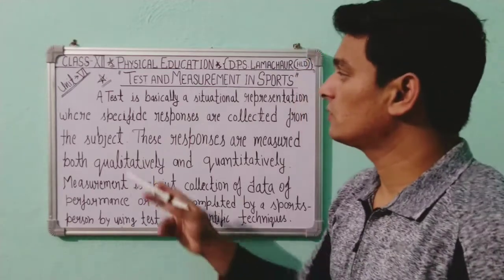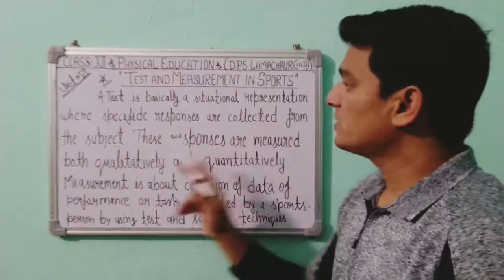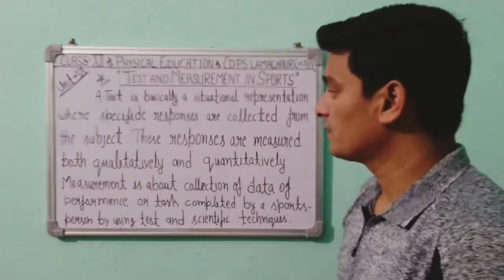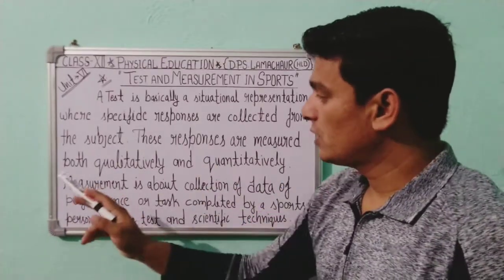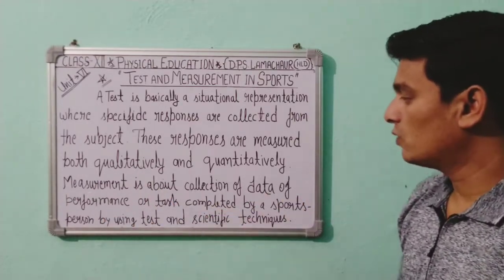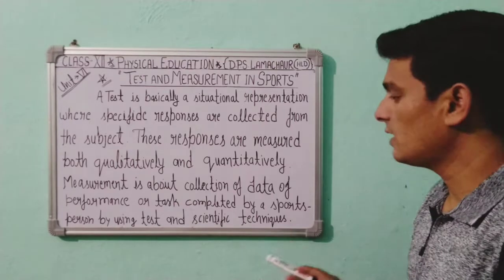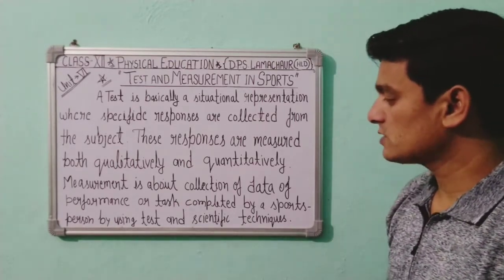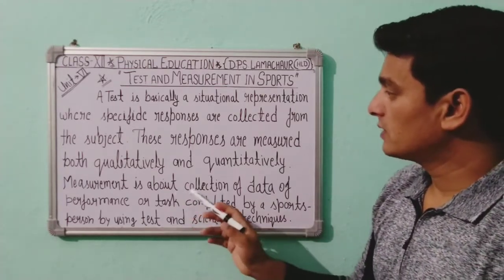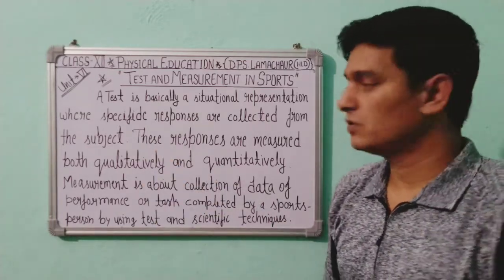A test is basically a situational representation where specified responses are collected from the subject. These responses are measured both qualitatively and quantitatively. Measurement is about collection of data of performance or tasks completed by a sports person using tests and scientific techniques — it is a collection of data about a subject, who is a sports person or a student.